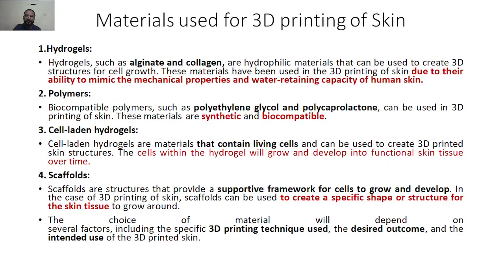The materials used include hydrogels, polymers, cell-laden hydrogels, and scaffolds — all discussed in previous classes. For hydrogels specifically for skin, we use alginate and collagen, which are hydrophilic materials used to create the 3D structure of cells. They are used because of their ability to mimic the mechanical properties and water-retaining capacity of human skin. For polymers, examples are polyethylene glycol or polycaprolactone — synthetic polymers that are biocompatible in nature.